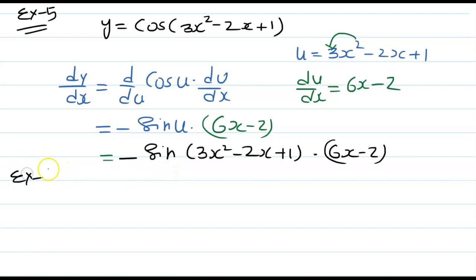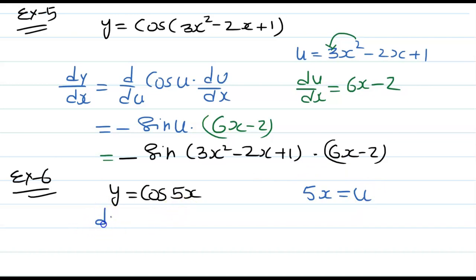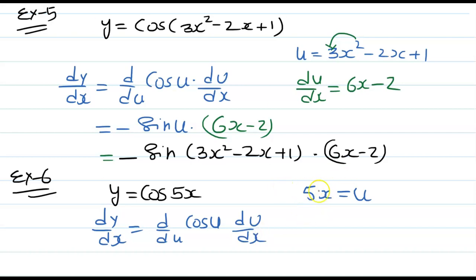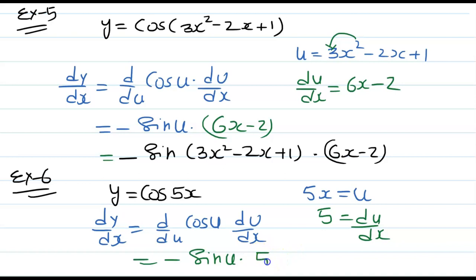Example 6: if y equals cos(5x), suppose u equals 5x. So dy over dx equals d over du of cos u times du over dx. Differentiating 5x gives du over dx equals 5. The derivative of cos u is minus sin u, and du over dx is 5, so this gives minus 5 sin(5x).